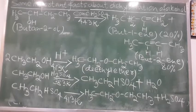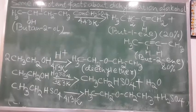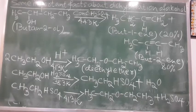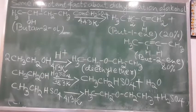In simple words, the more symmetrical alkene is always the major product. So when butan-2-ol, which is a secondary alcohol, is treated with concentrated sulfuric acid at around 443 Kelvin, we get two products: but-1-ene, which is the minor product, and but-2-ene, which is the major product. Between butan-2-ene and butan-1-ene, the symmetrical one is butan-2-ene, so according to Zaitsev's rule, butan-2-ene is the major product.